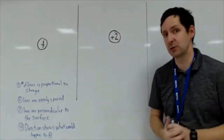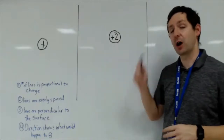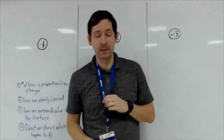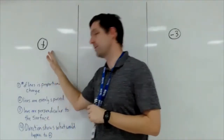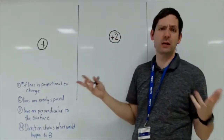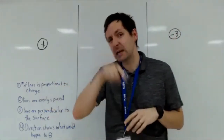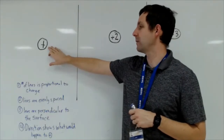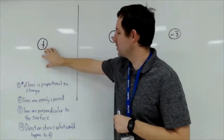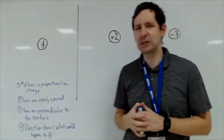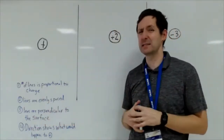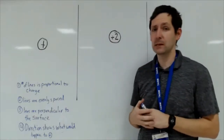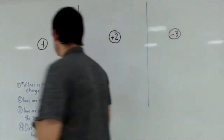I'm going to draw fields for a positive one, a positive two, and a negative three charge. The units are coulombs. You really shouldn't ever make less than four lines — anything less and you won't be able to see what the field looks like. So a plus one charge is worth four field lines.